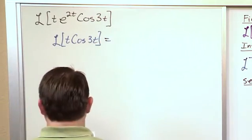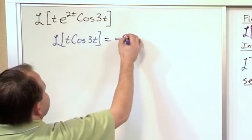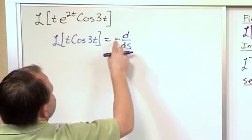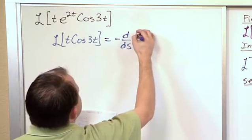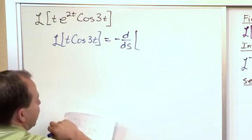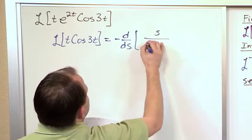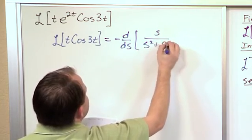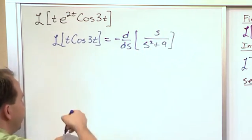So then what I'll have is, it'll be negative d ds, first derivative. Negative comes from what was out in front. Of the Laplace Transform of a cosine, and I just went and showed you that it was s over s squared plus 9. The 9 comes from the fact that it's 3 squared.